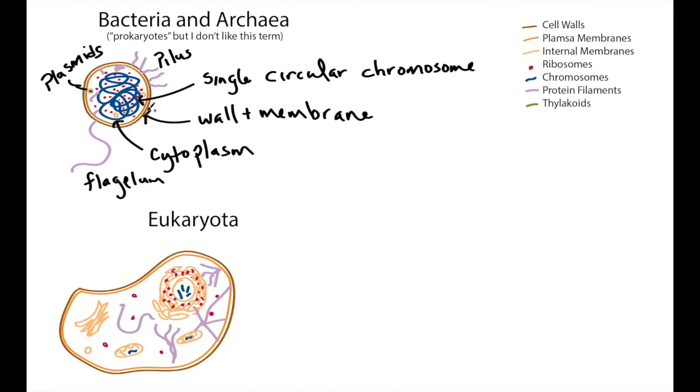So archaea and bacteria just have all of these components, more or less, dispersed in the cell. There'll be variations in the concentration, and they're organized somewhat by these protein filaments, but it's basically not really subdivided.